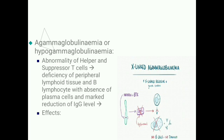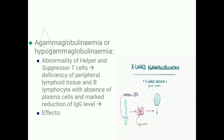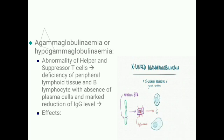Up to three to four months after birth, maternal antibodies are present in the baby. As maternal antibodies disappear, the child becomes susceptible to bacterial infection, but resists viral and fungal infection because cellular immunity is normal.